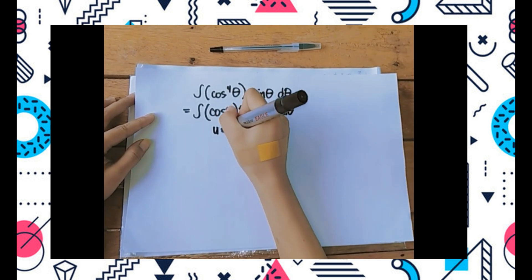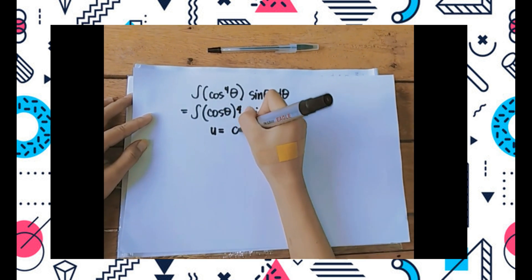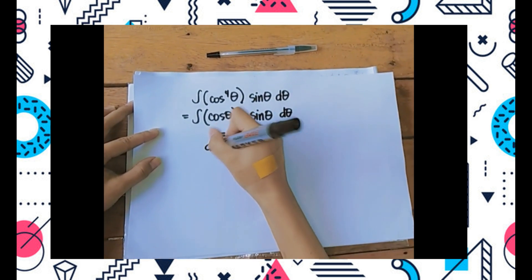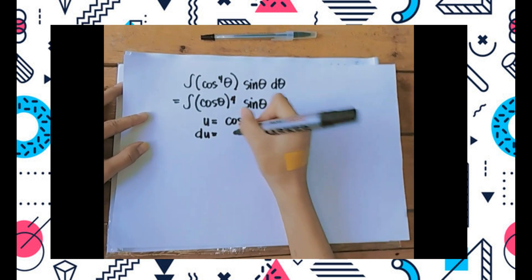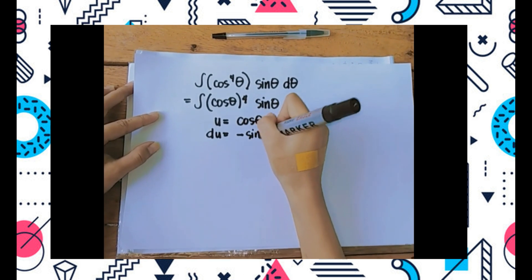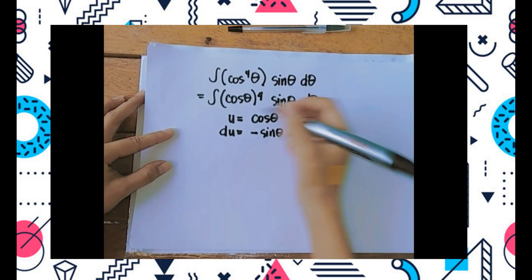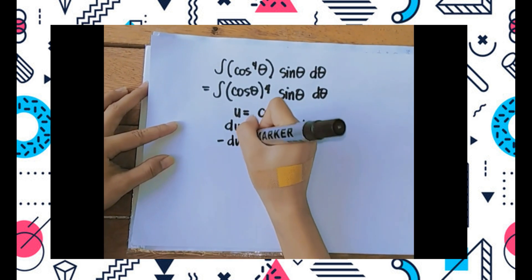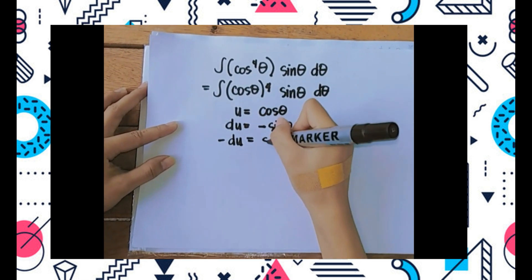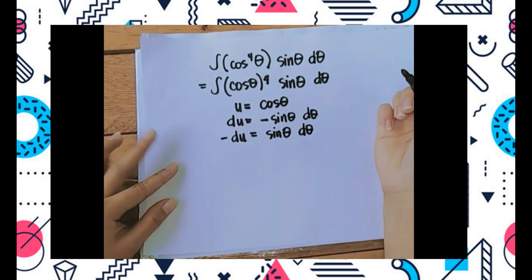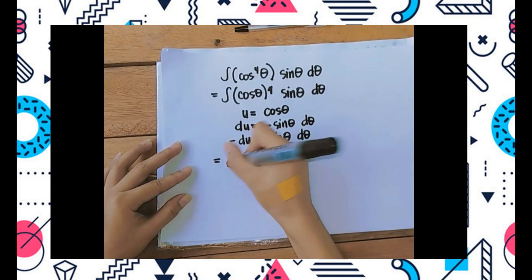So I'm going to let u equals cosine of theta. Well, the derivative or the differential is going to be negative sine of theta d theta. I can just multiply both sides by a negative and get negative du.